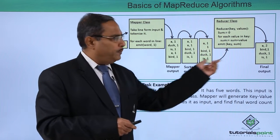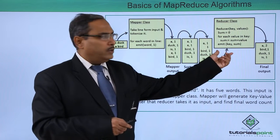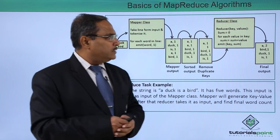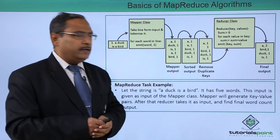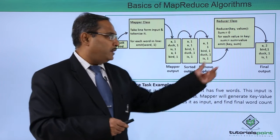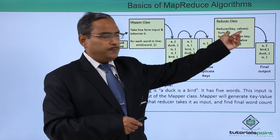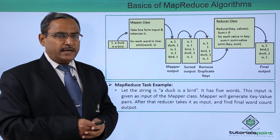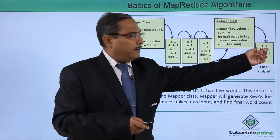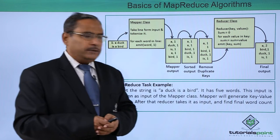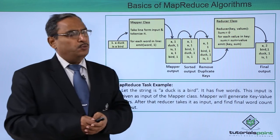This output goes as input to the reducer class. The reducer algorithm is: for each key-value pair, sum = 0; for each value in key, sum = sum + value; emit key, sum. In this way it takes key-values as input and emits key-sums as output, also a key-value pair. So 'a' gets sum 2, 'bird' 1, 'duck' 1, and 'is' 1. That is the final output.